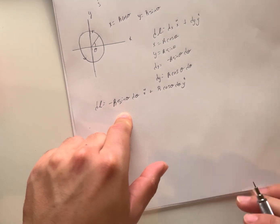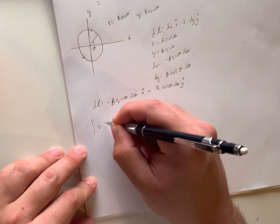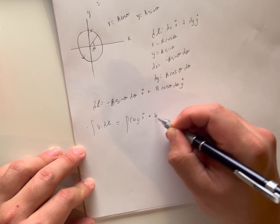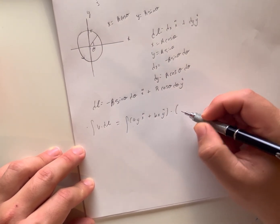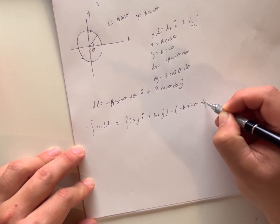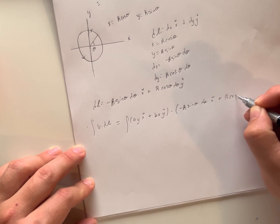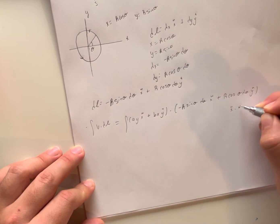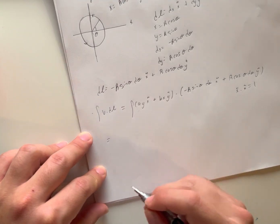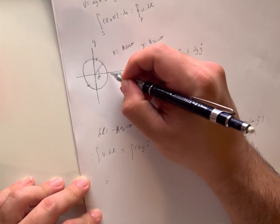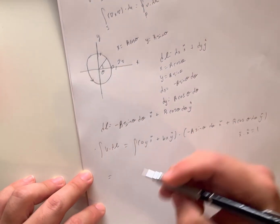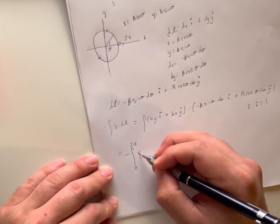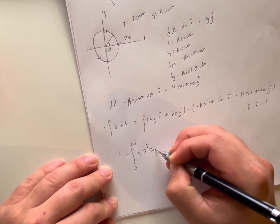Now we dot this with our vector function. We know that a unit vector dotted with a unit vector will get us 1, and our path is circular so we go from 0 all the way around to 2*pi.